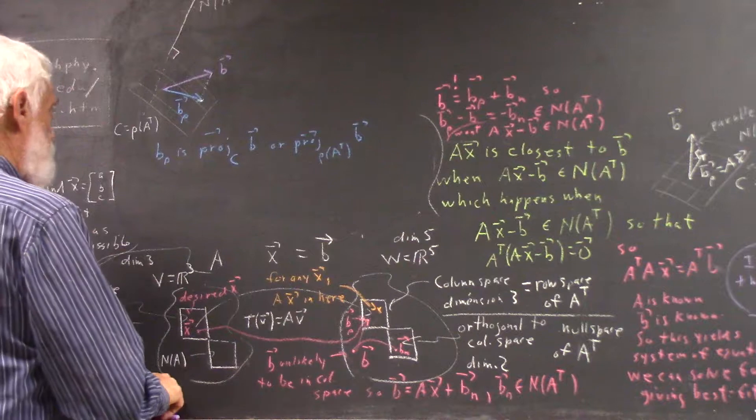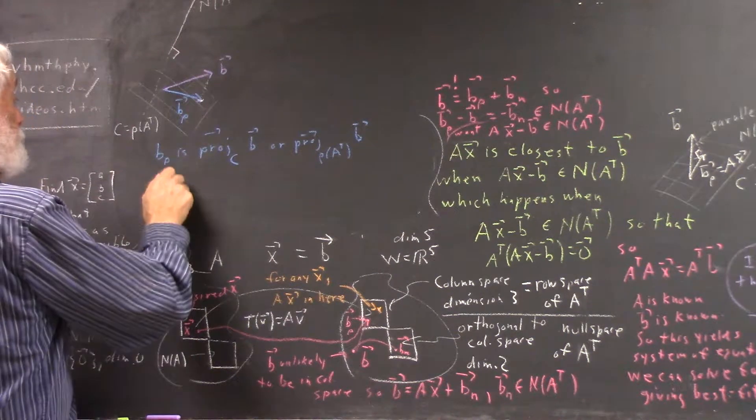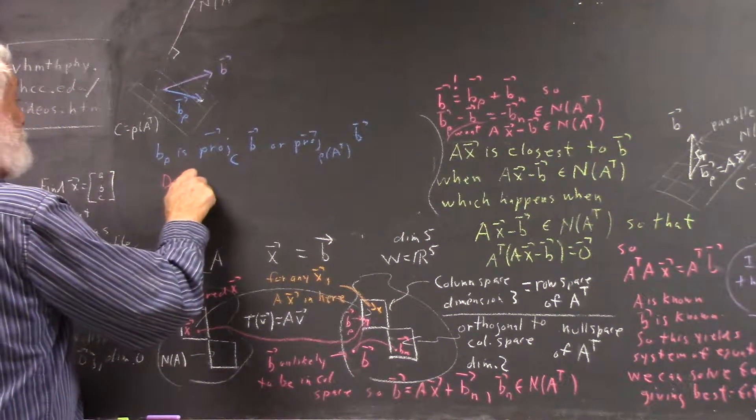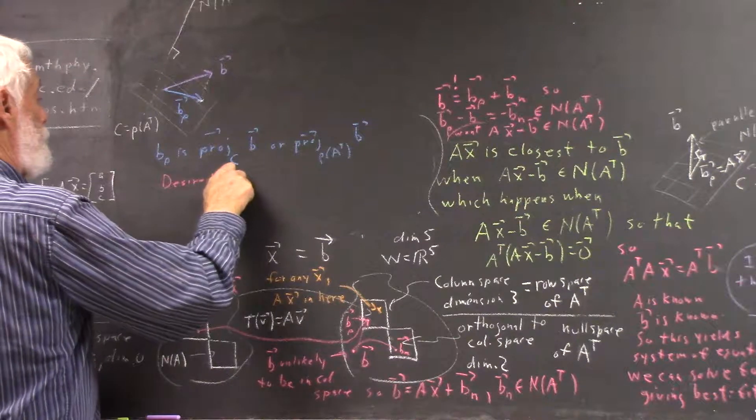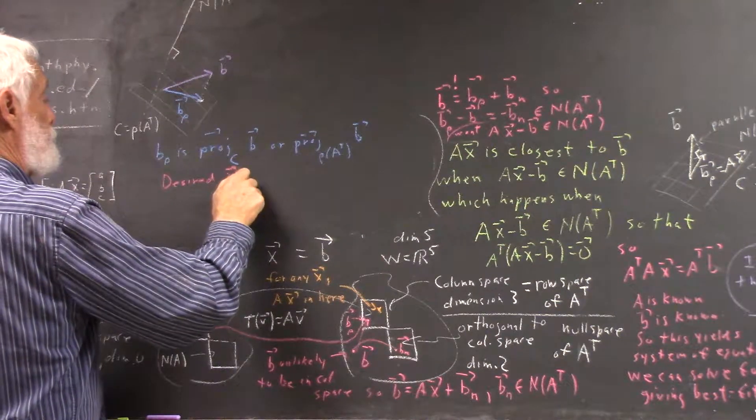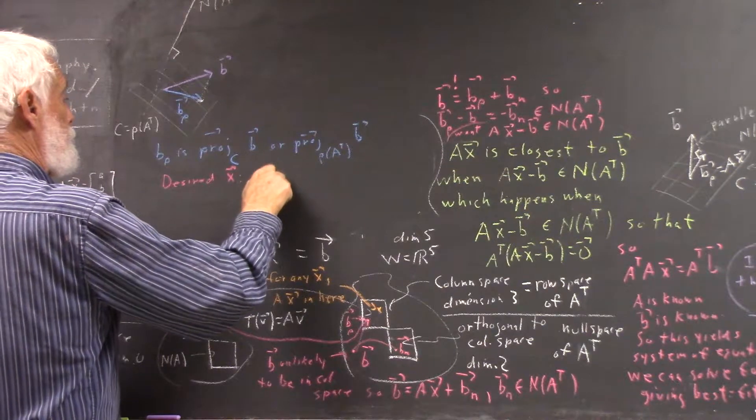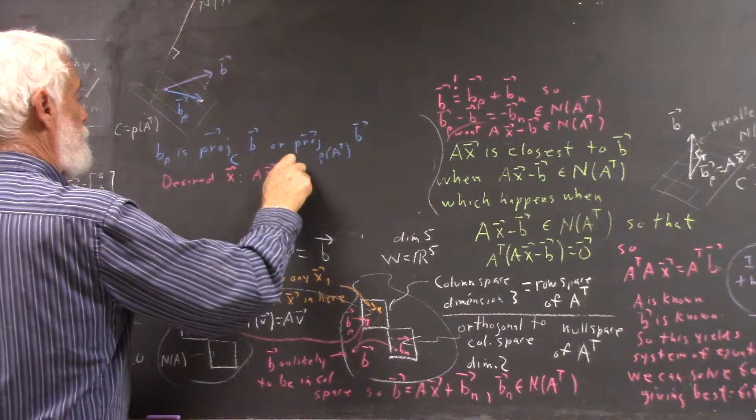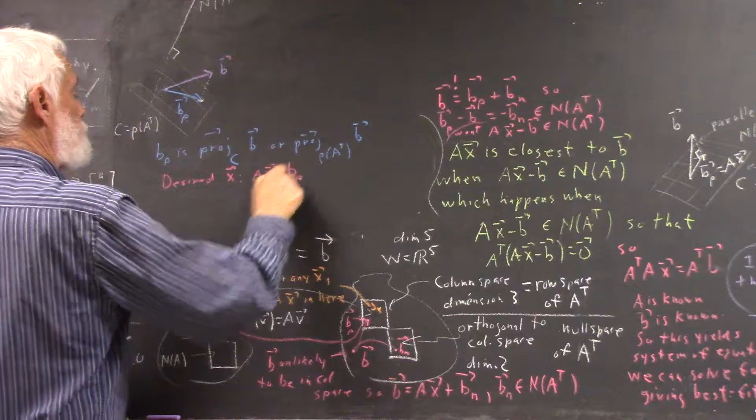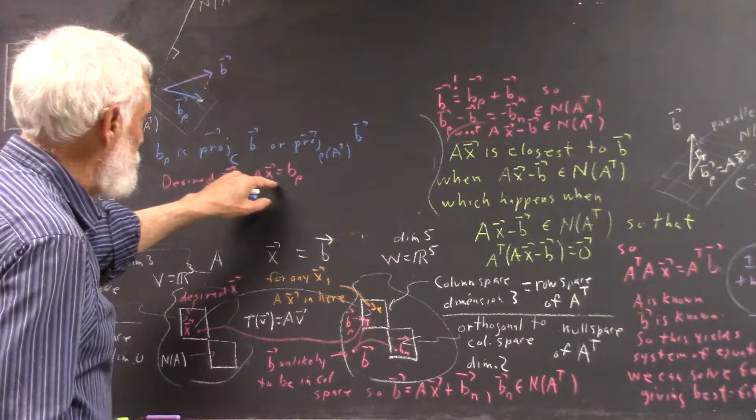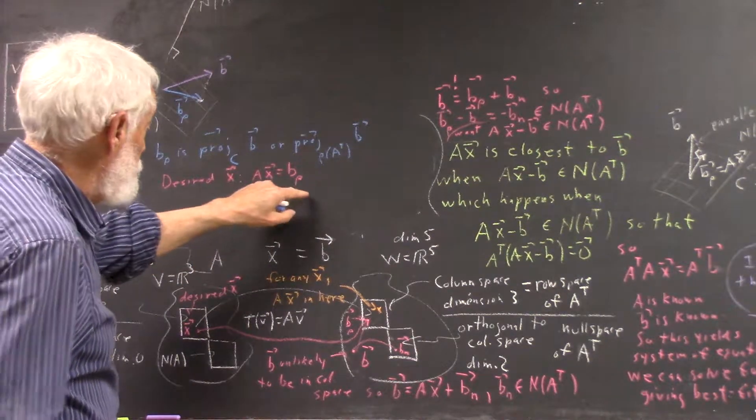And then again, the desired X is the X for which the transformation takes it to B rho.